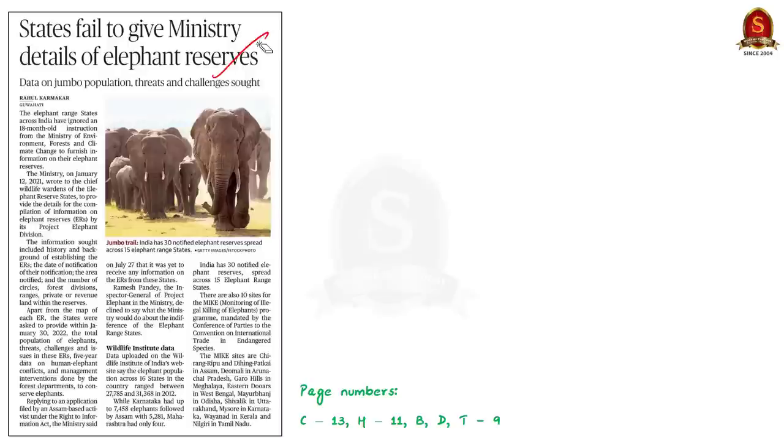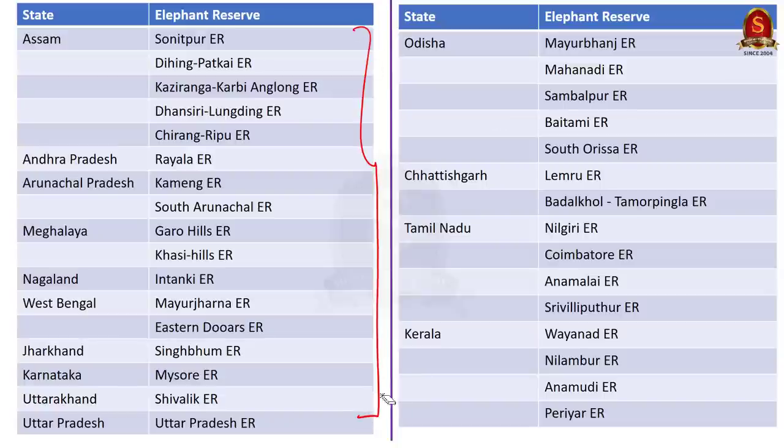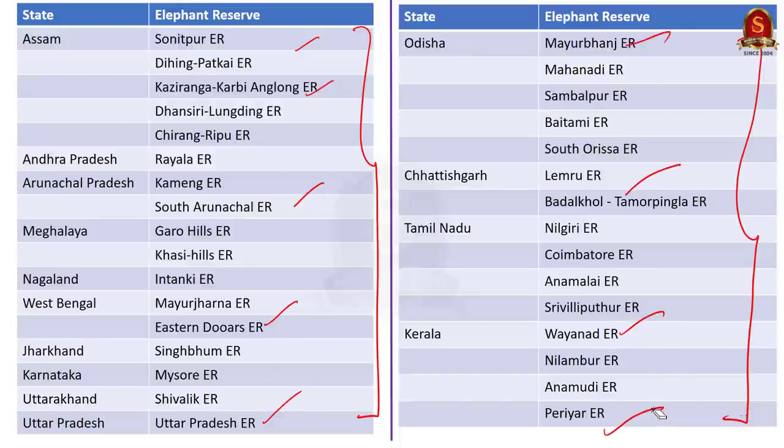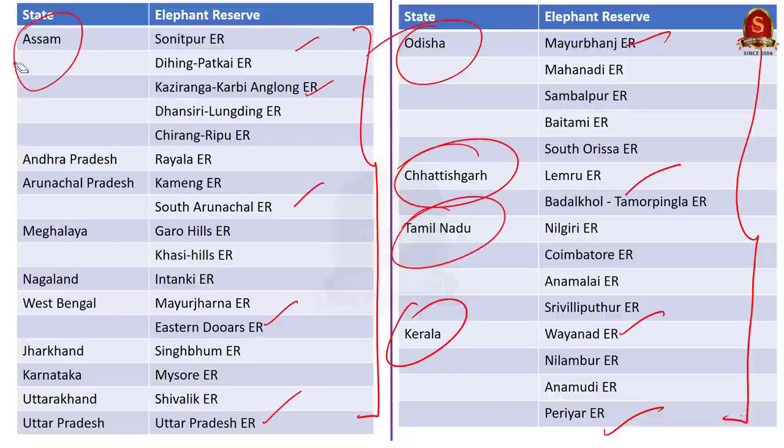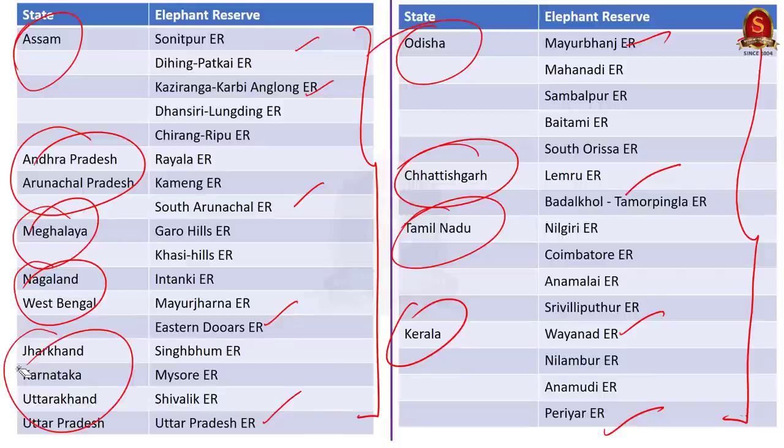See this final article here. Last year on January 12, 2021, Union Ministry of Environment, Forest and Climate Change wrote to chief wildlife wardens of the elephant reserve states to provide information about the elephant reserves. The union ministry asked this information to make the compilation of information on elephant reserves by its project elephant division. But it has been over a year, but states failed to give the details. In this context, let us see some important points about the elephant reserves in India. I have displayed all of the elephant reserves in India and the corresponding states in which they are located. Read it one by one and try to just remember which elephant reserve is in which state. Because there may be a question in prelims where they ask elephant reserves and the corresponding states in pair-based questions.